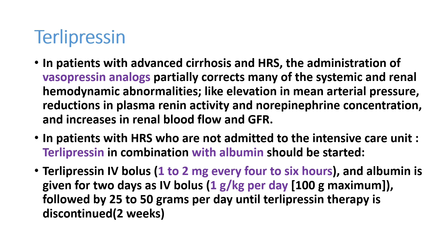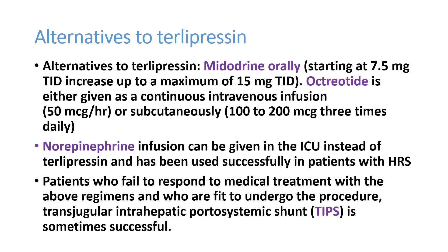Alternative drugs to terlipressin include midodrine, an oral drug started at 7.5 mg three times daily and increased up to 15 mg three times daily. Octreotide can also be given, either as an intravenous infusion or subcutaneously three times daily, making outpatient-based treatment possible as well.